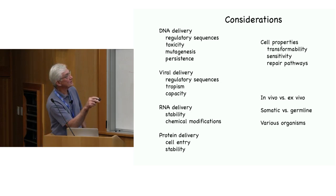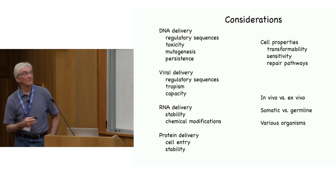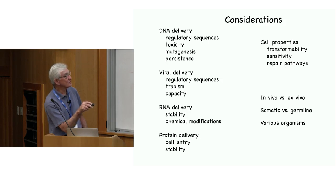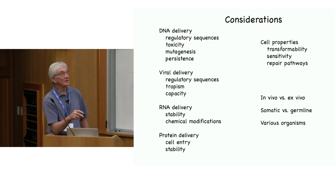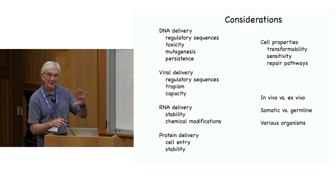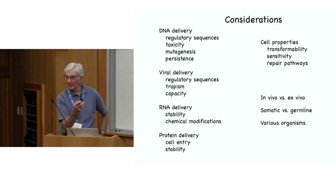It often works best if you have a little intron in addition to protein coding sequences. Some viruses are very cell specific and don't infect all cells. One of the most popular viral vectors has limited capacity. You can deliver RNA directly to cells, but there's a stability issue. You can make chemical modifications, and you can do protein delivery, though getting proteins into cells is not trivial, particularly for in vivo delivery in a whole organism.